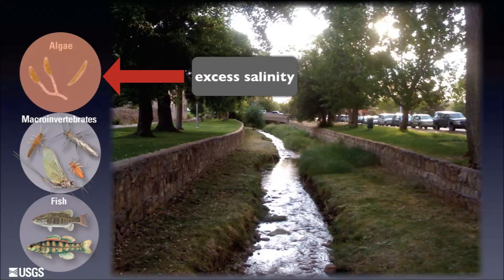Looking at the algae communities in Shingle Creek, the most abundant species are those that thrive in highly saline environments — yet this is a freshwater stream. The implication is a salinity problem. Intensive monitoring data confirmed very high levels of salinity in Shingle Creek during the winter, leading to the conclusion that road salts applied to de-ice streets and sidewalks were washing into the streams and groundwater.